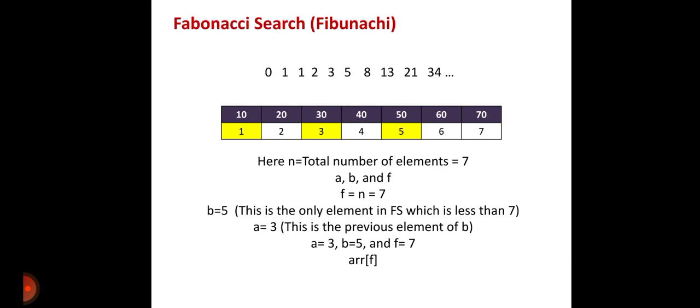Now let us consider one example where we have elements 10, 20, 30, 40, 50, 60, 70. These are the elements, and their indices are 1, 2, 3, 4, 5, 6, 7. So these are the indices of these elements which are given in array form.